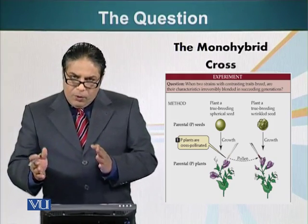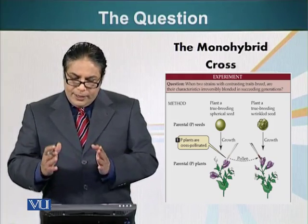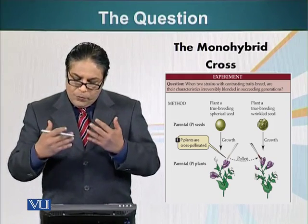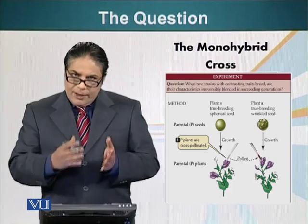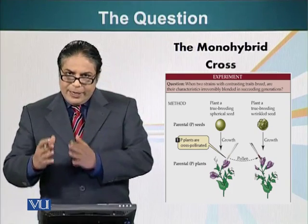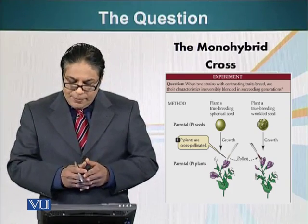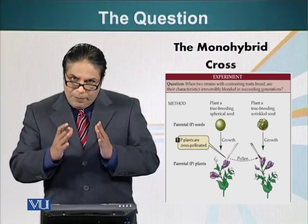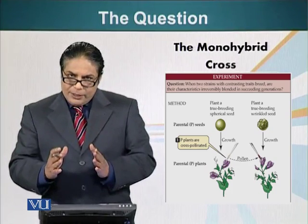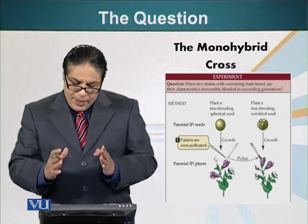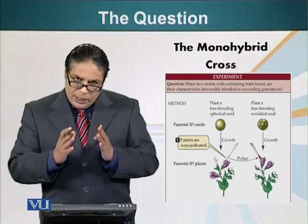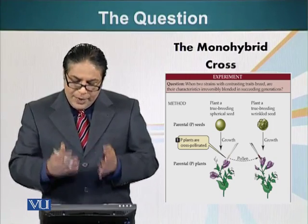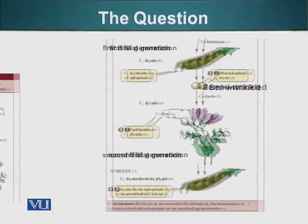Then he cross-pollinated a plant that was going to produce spherical seeds with a plant that was going to produce wrinkled seeds. These plants were the parental plants, which were true breeding, and they are denoted as parental plants, or P, abbreviated P.